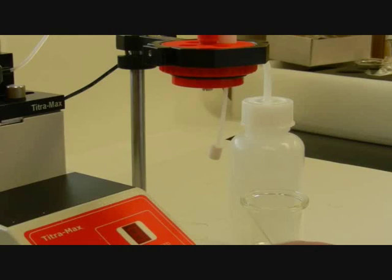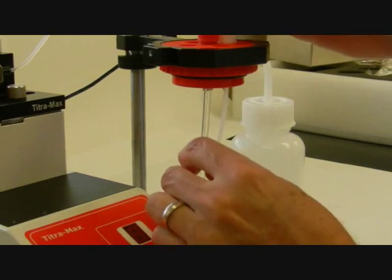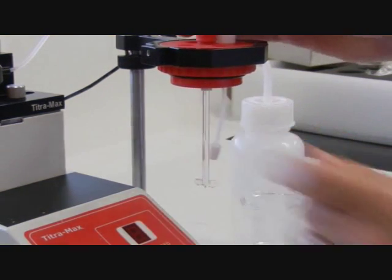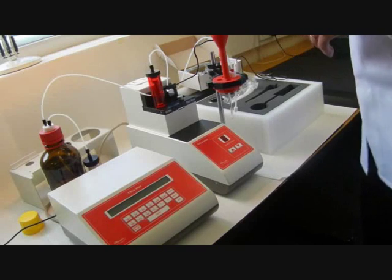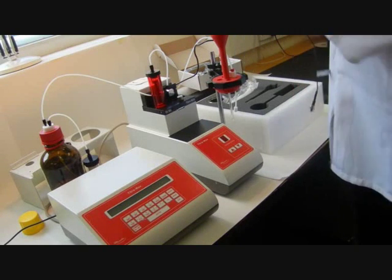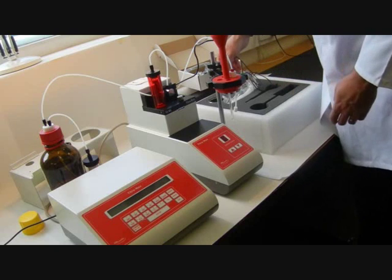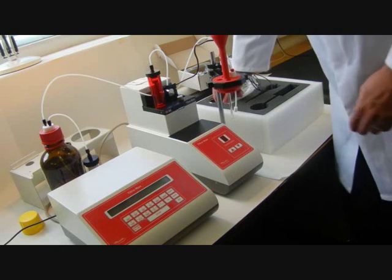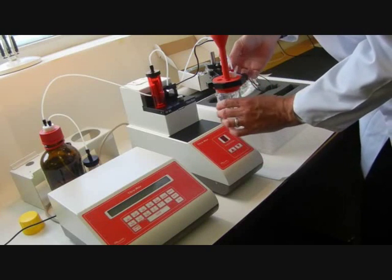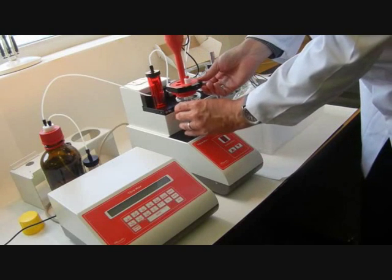Next we can fit the stirrer bar simply by pushing up into the stirrer motor. The electrode there we do not need to connect just yet. Get the titration vessel in place.